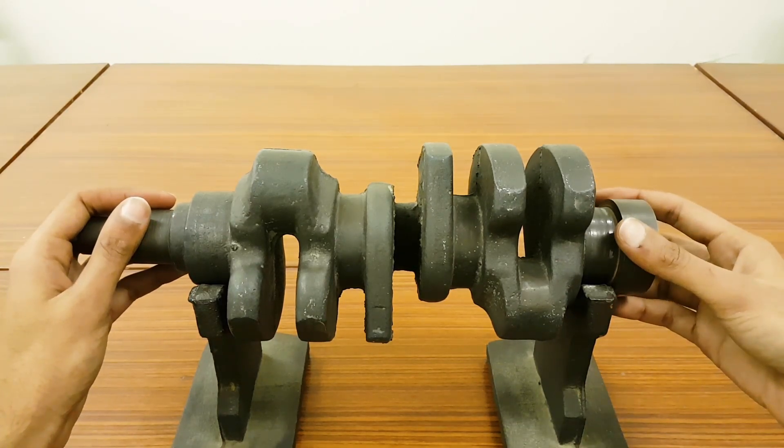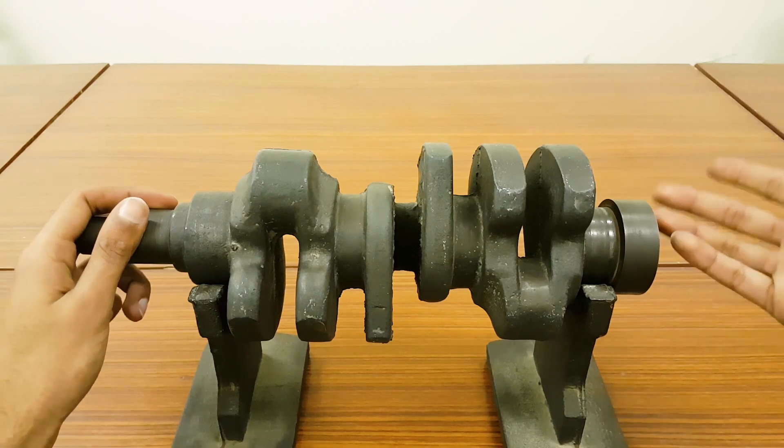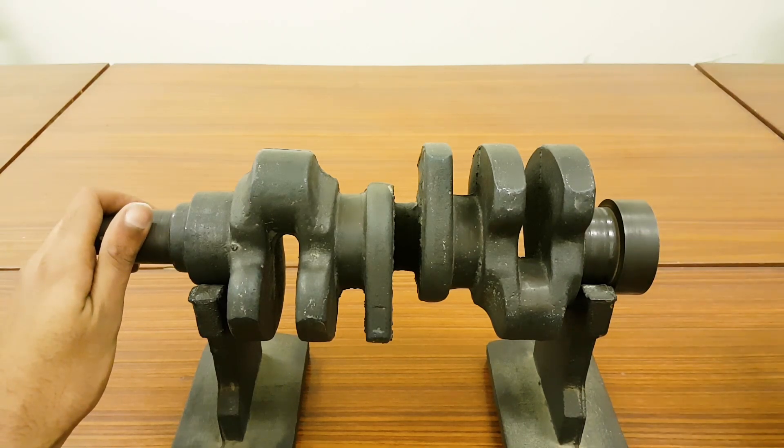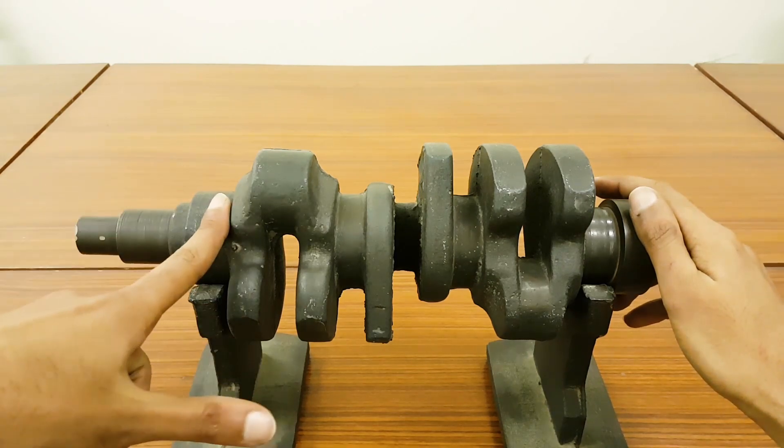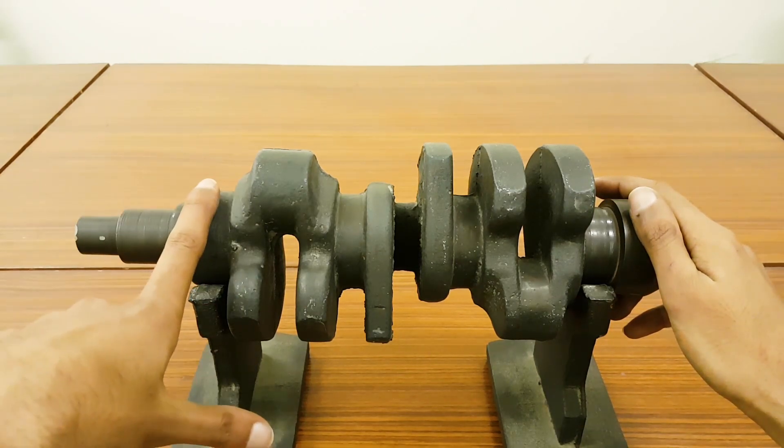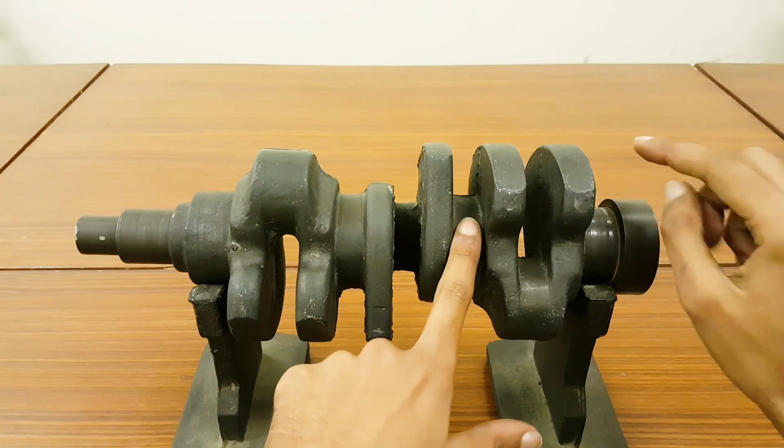On the other side you can see this is flange, basically the rear end of crankshaft where the flywheel comes and fits with it. In between you can see there are four main journals: one, two, three, and four.